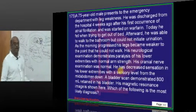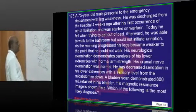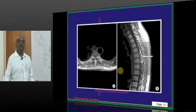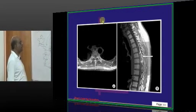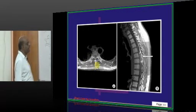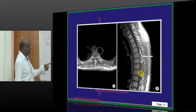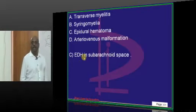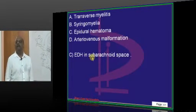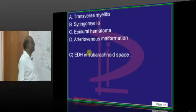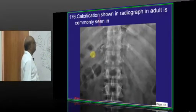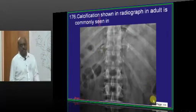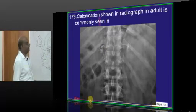A 75-year-old presents with leg weakness and inability to walk; neurological examination shows paralysis. On MRI, a bleed is seen in the subarachnoid space — actually, it is an extradural hemorrhage. That is the better term, not subarachnoid.